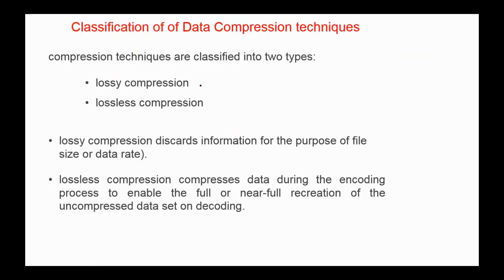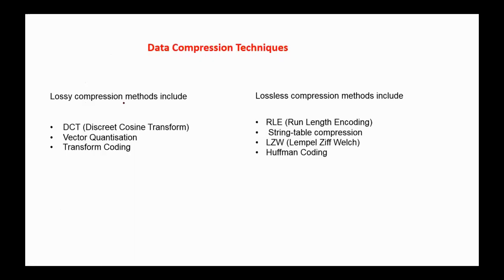Data compression techniques are classified into two types: lossy compression and lossless compression. Lossy compression discards information for the purpose of reducing file size or data rate, while lossless compression compresses data during encoding to enable full or near-full recreation of the original uncompressed data set on decoding. The main methods used in lossy compression are DCT (discrete cosine transform), vector quantization, and transform coding. Methods used in lossless compression include run-length encoding, string-table compression, Lempel-Ziv-Welch encoding, and Huffman coding.